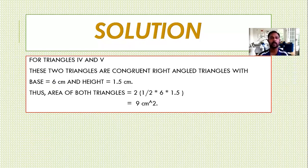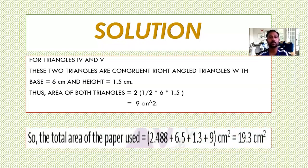So, we find the area of all the 5 parts. Now, what is our aim? To find the area of the total figure. So, the area of the total paper used is area of all the parts: 2.488, 6.5, 1.39, and 9, we are getting 19.3 cm² approximately.